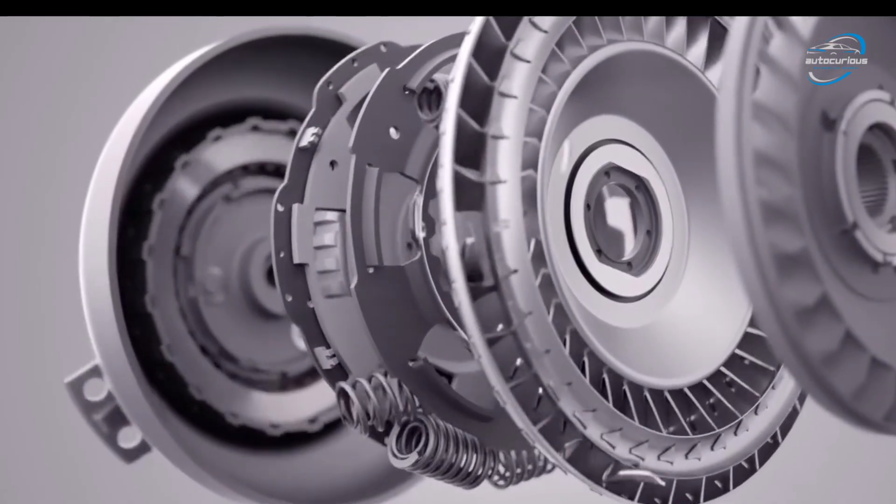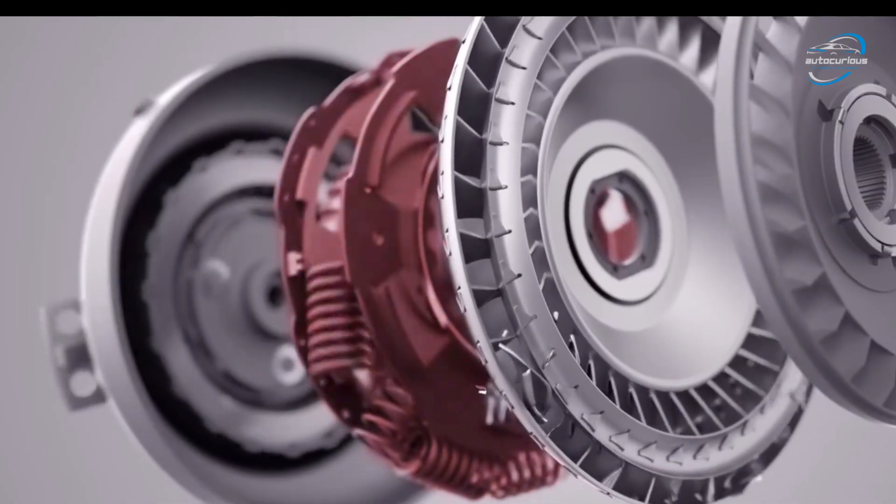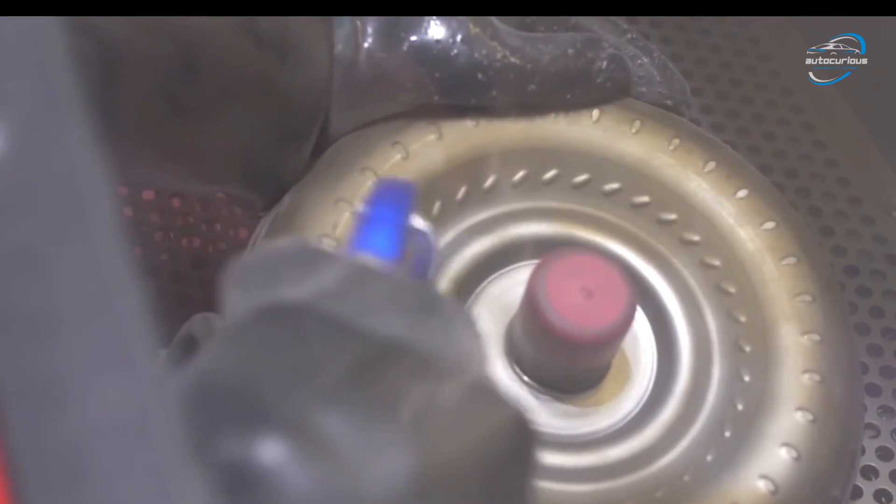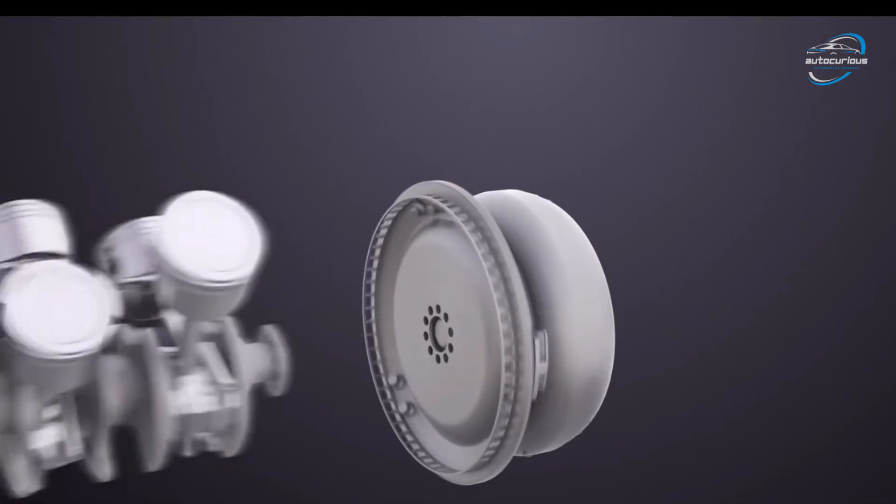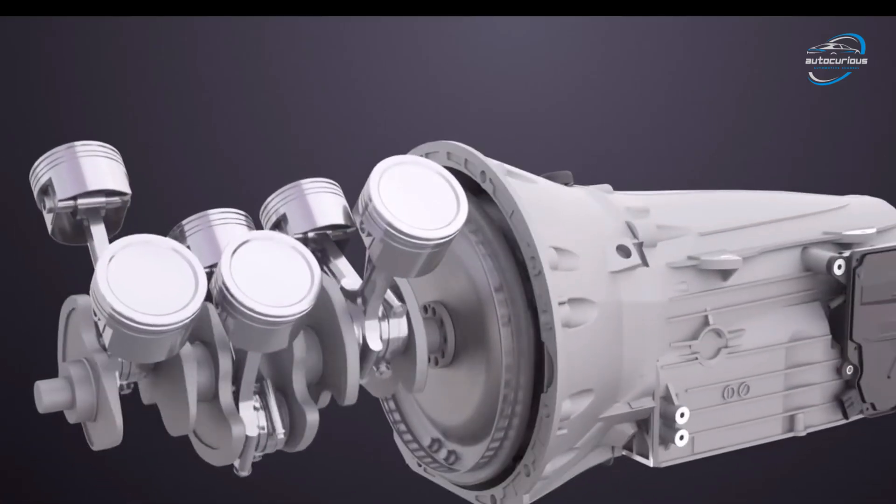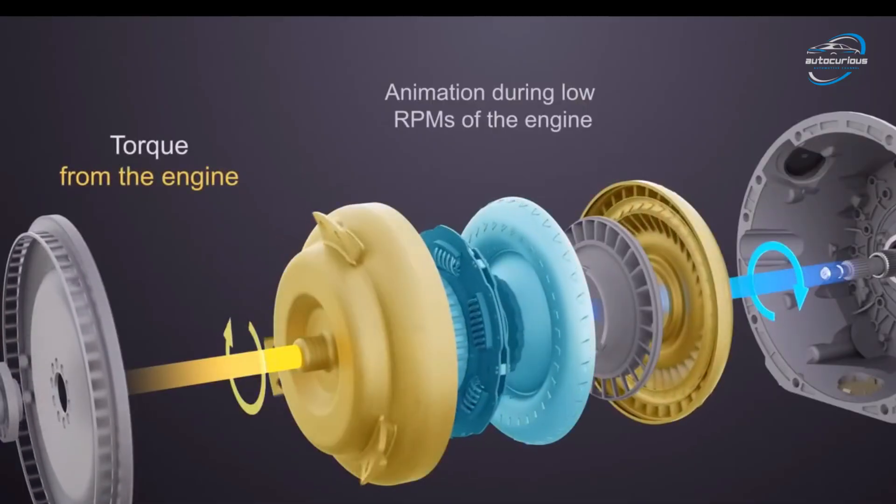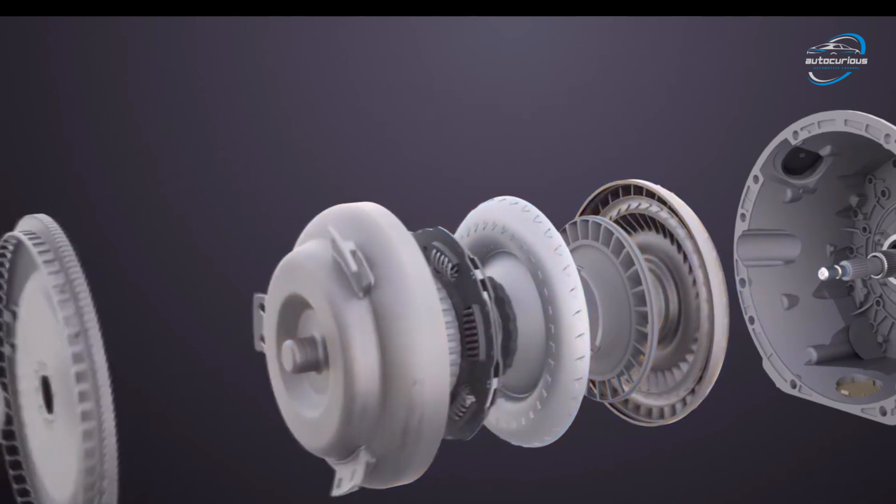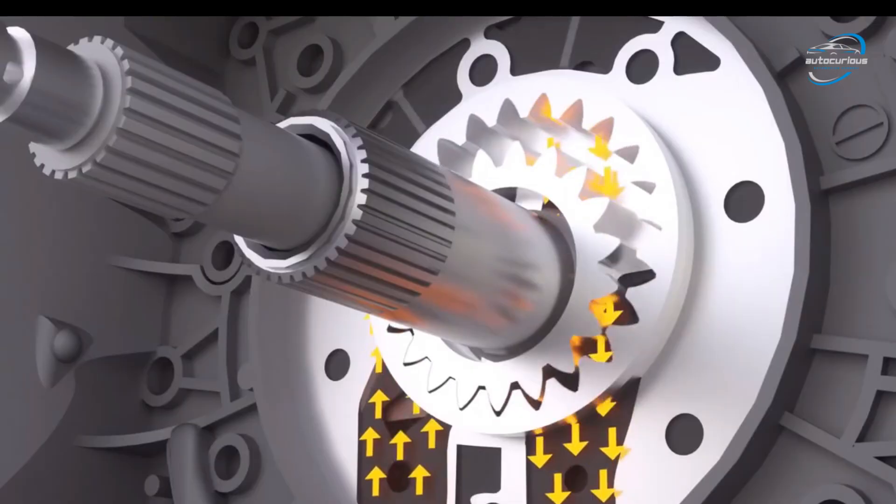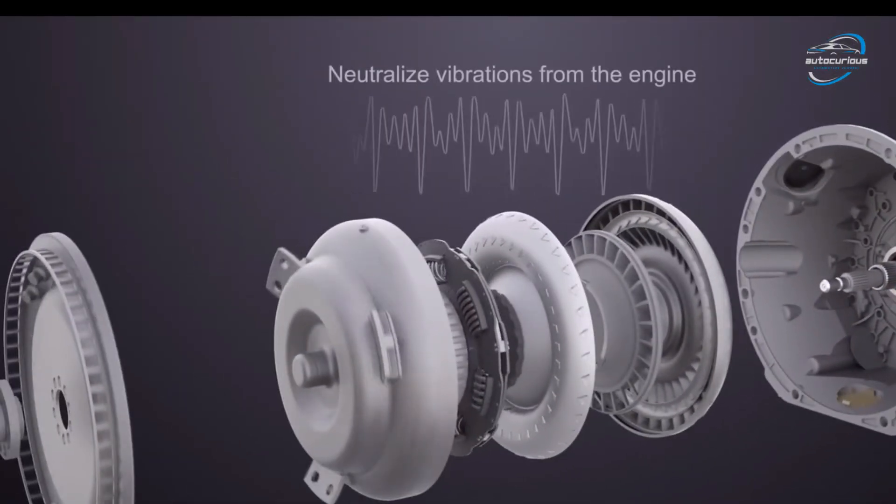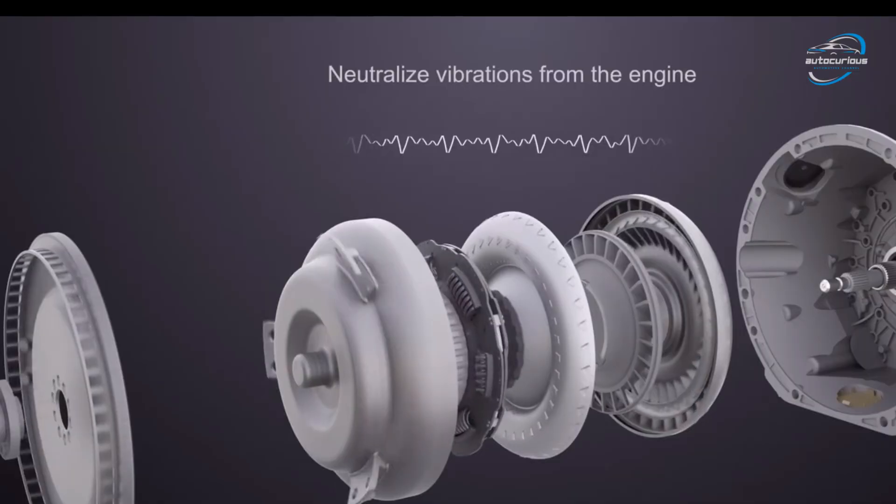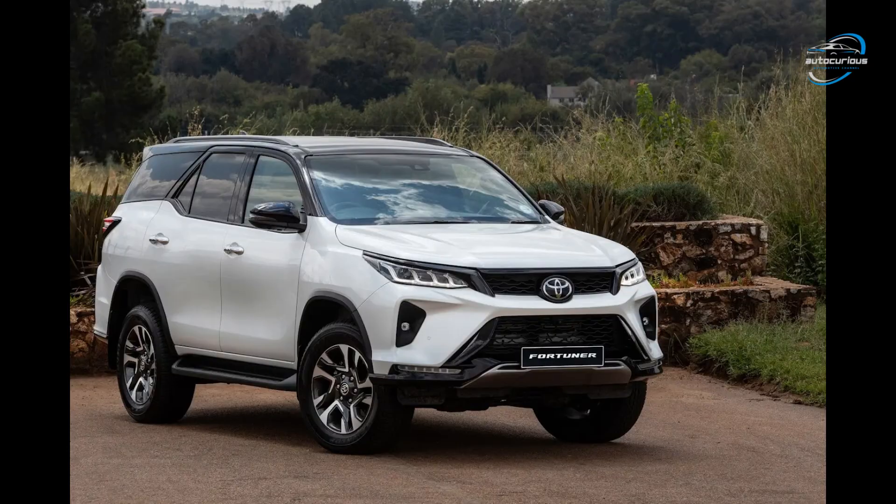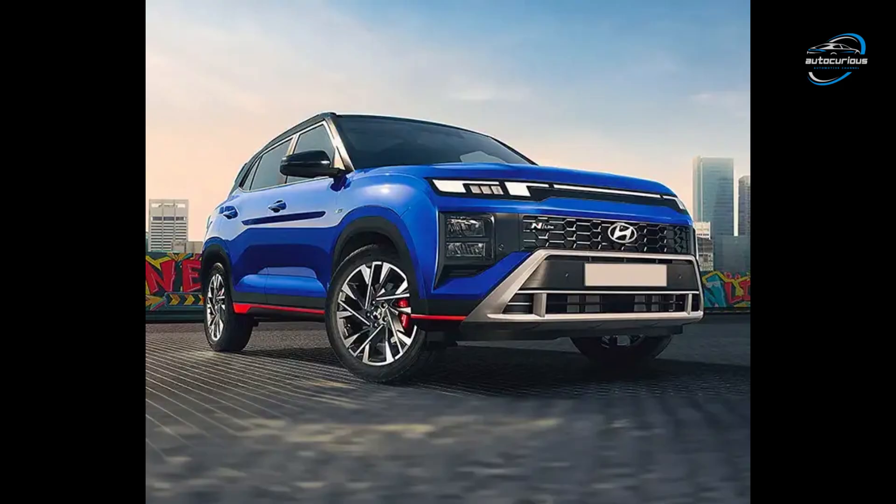Number first is the torque converter automatic transmission. Known as the granddaddy of automatics, this system uses a torque converter, instead of a clutch, to manage power between the engine and the wheels. It's been around for decades, and it's known for its smooth performance. The benefits are very smooth gear changes, proven reliability, and great for relaxed city or highway driving. The cons are generally less fuel efficient compared to newer types, and slightly sluggish at low speeds. You'll find this in cars like the Toyota Fortuner, Hyundai Equator 80, or the Jeep Compass.